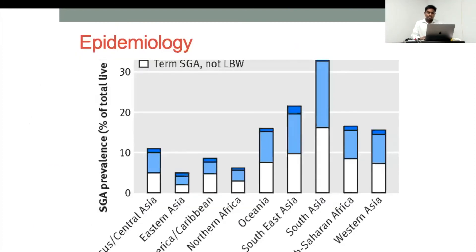Epidemiologically, Southern Asia has the highest prevalence of SGA, with India, Pakistan, and Afghanistan showing particularly high rates, while Eastern Asian countries like Japan have the lowest prevalence.